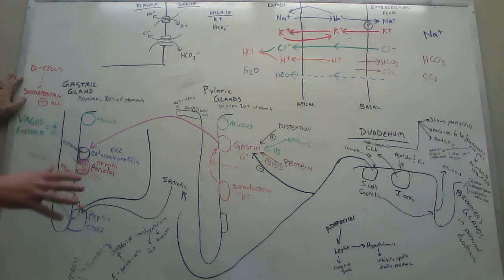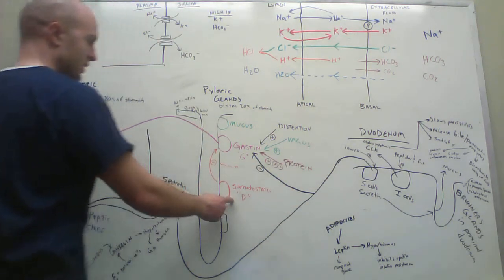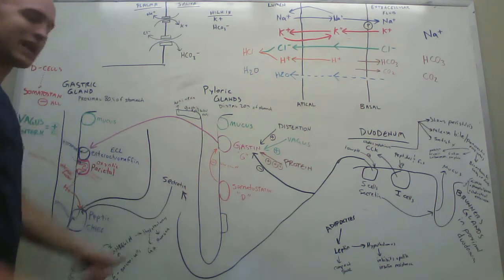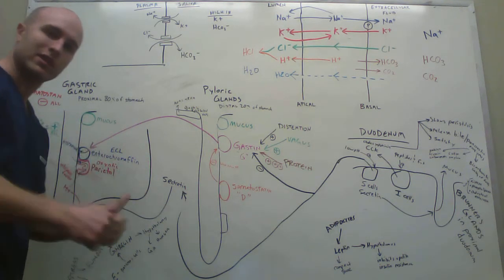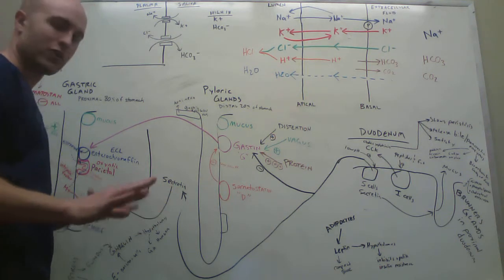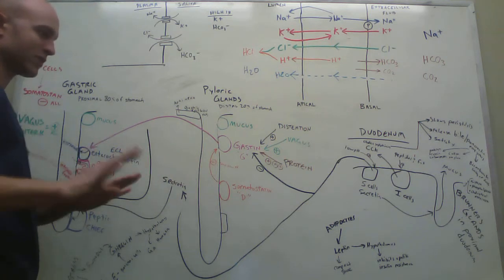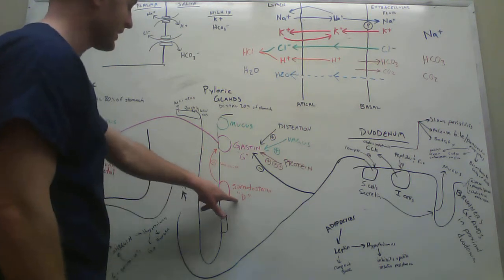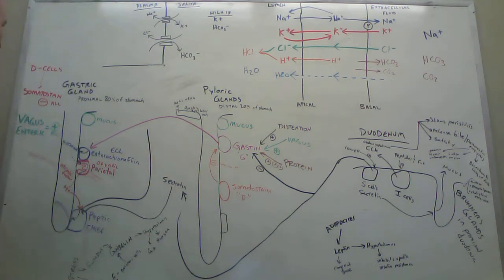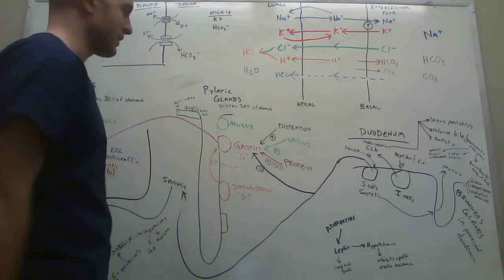The D cells release somatostatin. Somatostatin puts the brakes on. It's like trying to create stasis or stopping, somatostopping statin. It stops things, puts the brakes on, inhibits this whole process. And the vagus is speeding up the whole process.